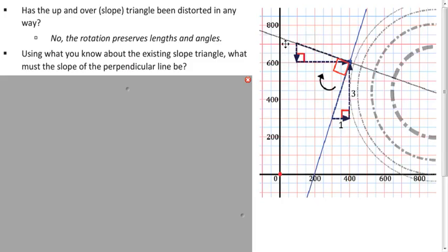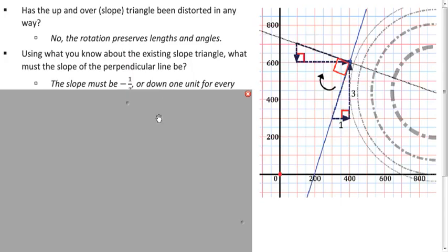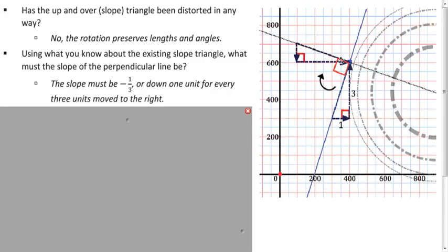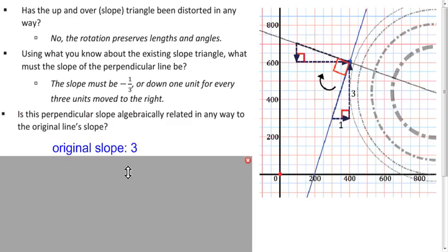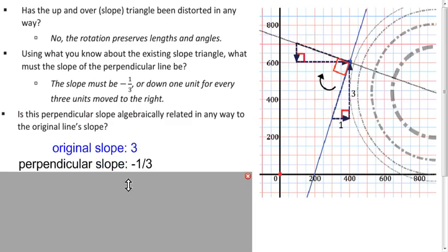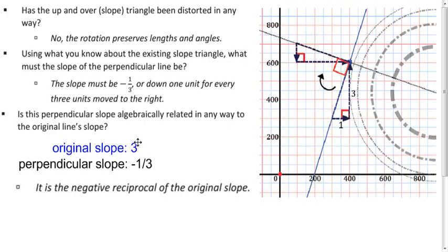What's the slope of the perpendicular line that we form at the hypotenuse of this rotated triangle? Now it's falling to the right, so the slope's going to be negative. The change in y is 1 and the change in x is 3, so it's negative 1 third. The original slope was 3, and our perpendicular slope is negative 1 third — these are negative reciprocals. The reciprocal of 3 is 1 third; multiply that by negative 1 and we get negative 1 third. Negative reciprocals have the property that when you multiply them, you get a product of negative 1.